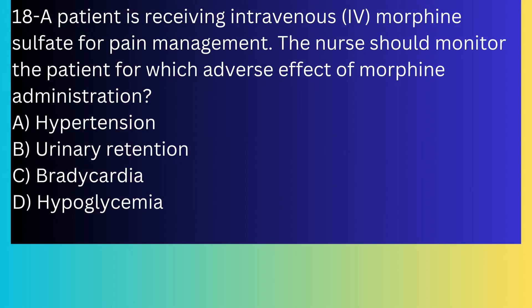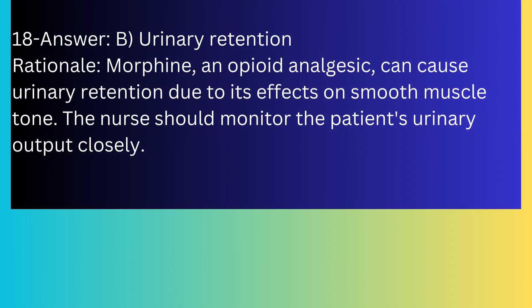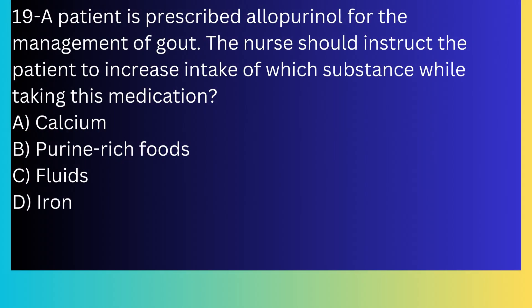Question number eighteen: A patient is receiving intravenous morphine sulfate for pain management. The nurse should monitor the patient for which adverse effect? A) Hypertension, B) Urinary retention, C) Bradycardia, D) Hypoglycemia. The answer is B, urinary retention. Morphine and other opioid analgesics can cause urinary retention due to their effects on smooth muscle tone. The nurse should monitor the patient's urinary output closely.